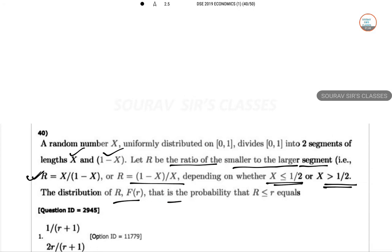The distribution of R, F(R), is the probability that R less than r. So R lies between 0 and 1. In this case we can write X/(1-X) ≤ r, so X ≤ r/(1+r).